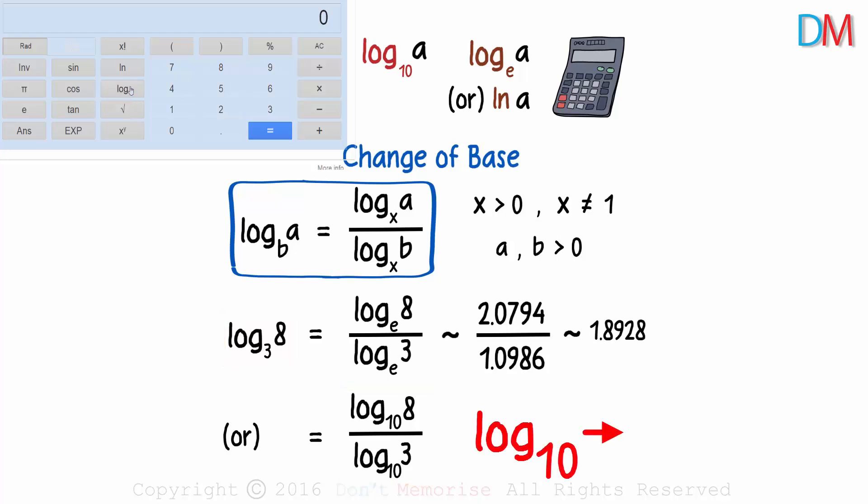Log to the base 10 can also be written as log. Log implies log to the base 10. Log of 8 gives us approximately 0.9031. Now we move on to the denominator. Log of 3 will give us 0.4771.